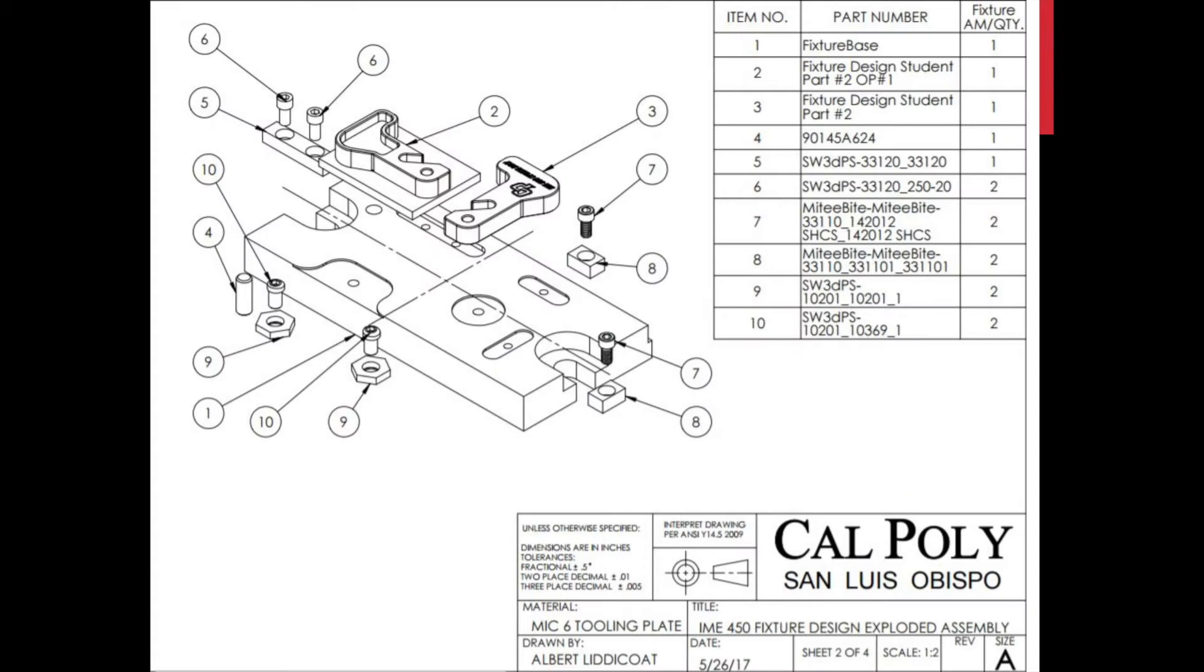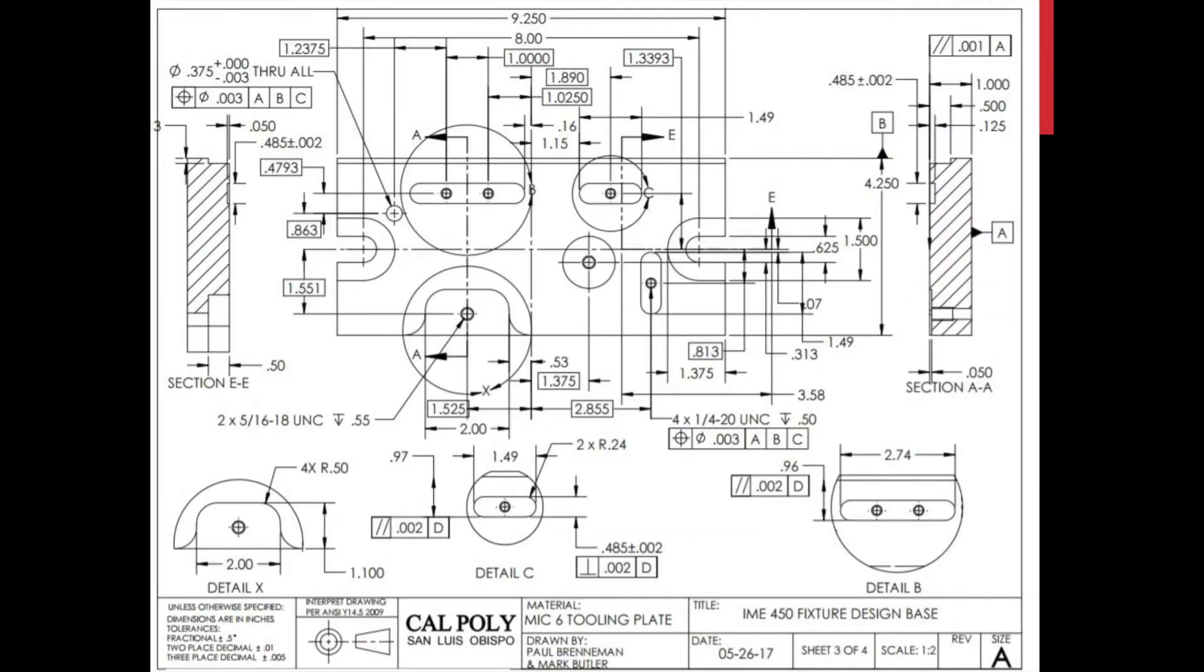This is our exploded assembly drawing. It shows all of the different components and corresponding fasteners on the fixture plate. This is our part drawing for the fixture plate. It includes datums and geometric dimensions.